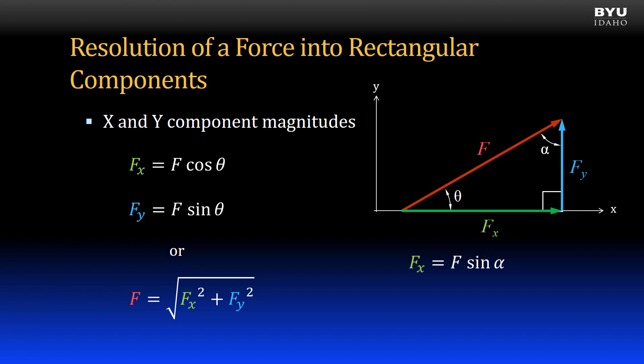To find F sub y, which is adjacent to alpha, we use F times the cosine of alpha.